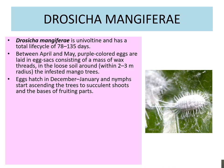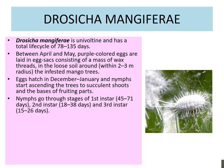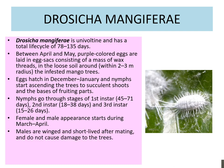Eggs hatch in December-January and nymphs start ascending the trees to succulent shoots and the bases of fruiting parts. Nymphs go through stages of 1st instar 45 to 70 days, 2nd instar 18 to 38 days, 3rd instar 15 to 26 days. The male and female appearance starts during March to April.